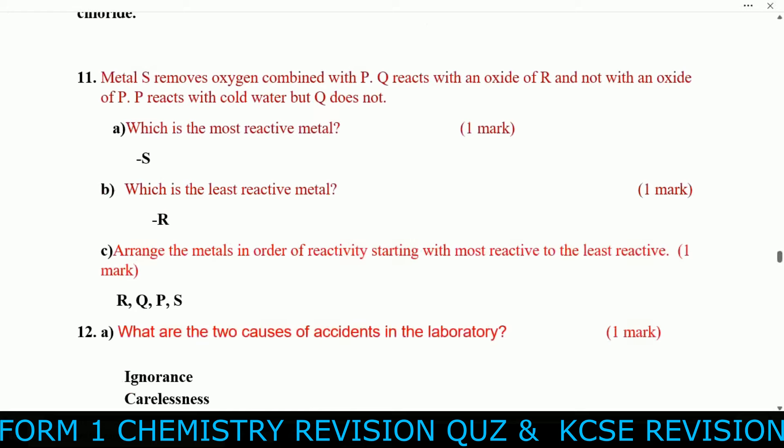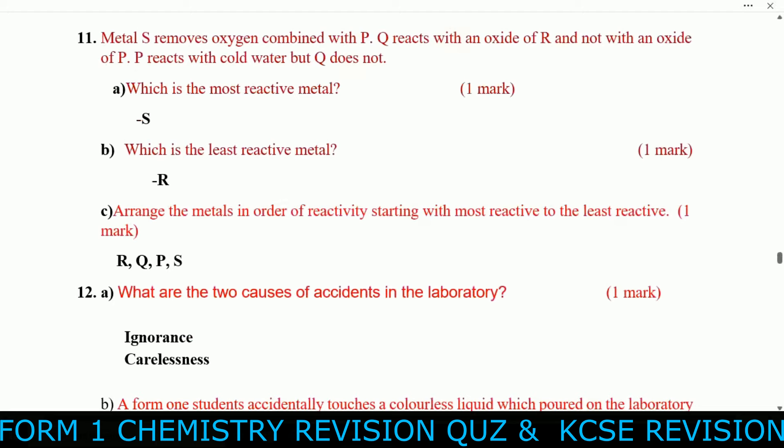Question eleven: Metal S removes oxygen combined with P and Q. Q reacts with the oxygen of R but not with the oxygen of P. P reacts with cold water but Q does not. The most reactive metal is S, and the least reactive is R. Arranged in order of reactivity from most to least reactive: S, P, Q, R.